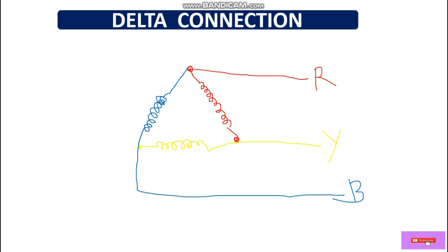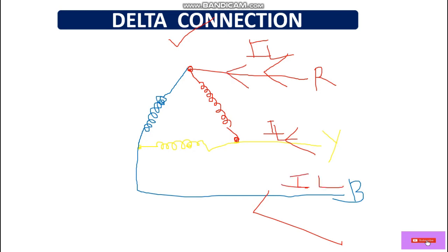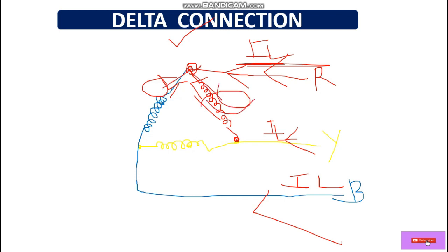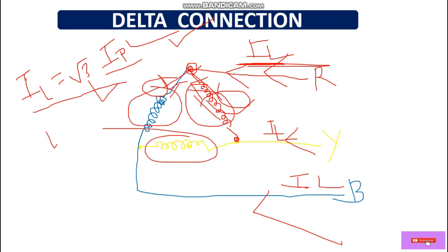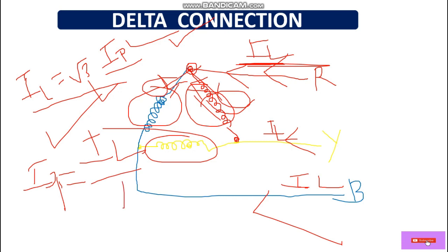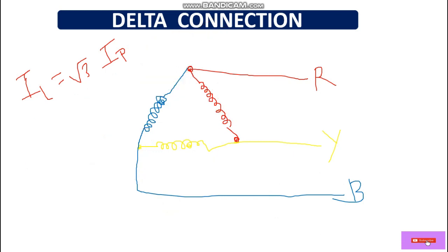For current in delta connection: the line current and phase current are not equal. The line current reaches a junction point and divides to both sides. Therefore, line current equals root 3 multiplied by phase current. To calculate phase current: I-phase equals I-line divided by root 3. This is the relationship between line current and phase current in delta connection.